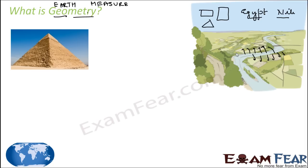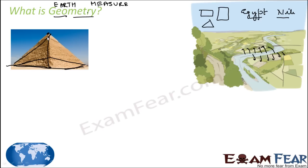Egyptians also used this knowledge of geometry to construct pyramids, canals, and granaries. A pyramid has a solid base — the base can be a triangle, rectangle, square, or any polygon — and all its side faces are triangles that converge to a point at the top. Egyptians knew all these concepts of pyramids, so they were actually quite good at geometry.